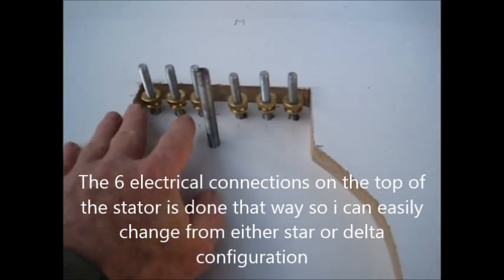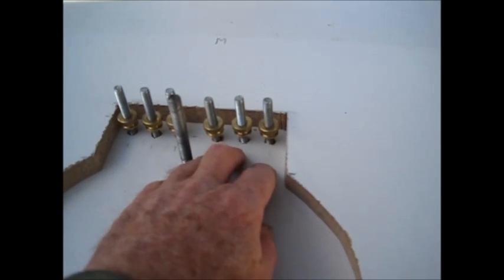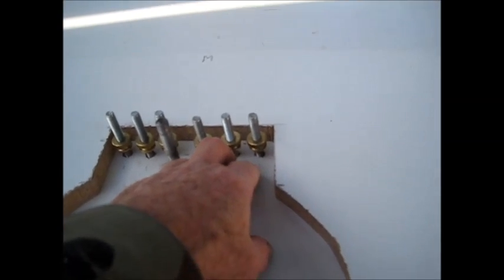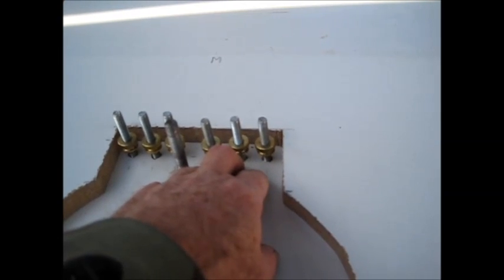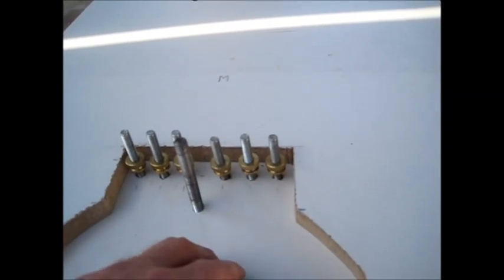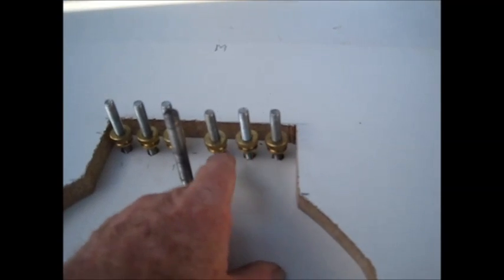So this will represent the end phase, this will be the start phase over here. Now a lot of guys I see all they have is just three connections showing on their stator mold. So whatever they've got set up in there, they're pretty much stuck with either star or delta, however they've wired up the start. With this one here, these will be exposed so I can either wire it in star or delta doing it this way.